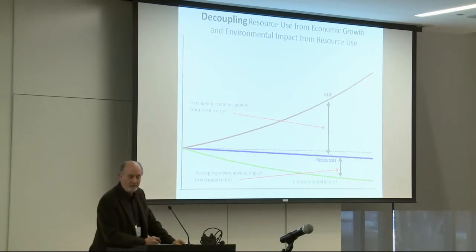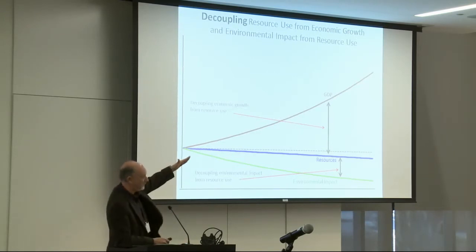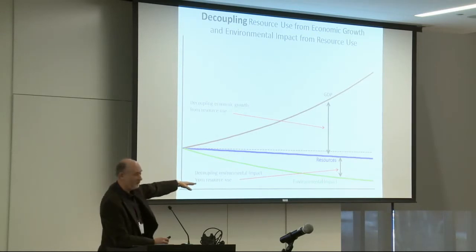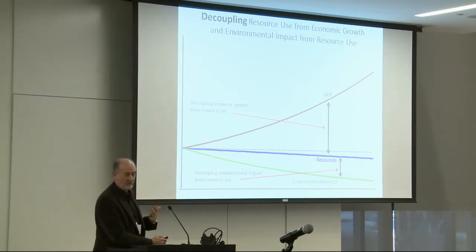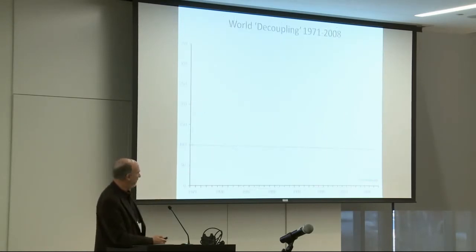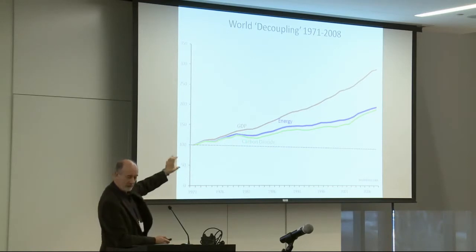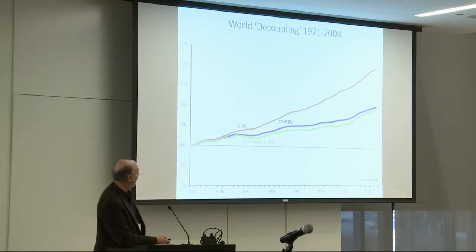Some people look to decoupling as the way forward — continue to grow the economy with rising GDP, decouple resource use, and further decouple environmental impact from resources. This is a way of characterizing green growth. But if you look at the data of the last 20 to 25 years using essentially the same structure, with global data: global GDP has been rising, global energy has been rising, and global carbon dioxide has been rising. Not as fast — so relative decoupling — but we're not dropping down. We're increasing the burden we place on the planet to support economic growth.